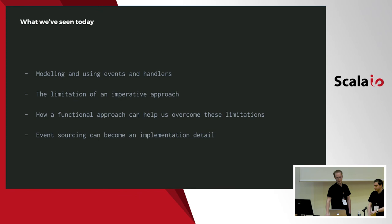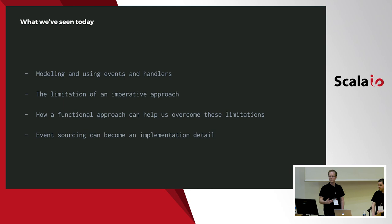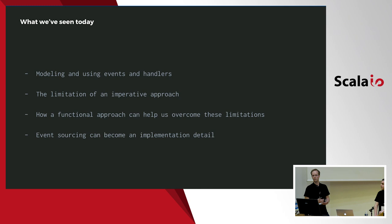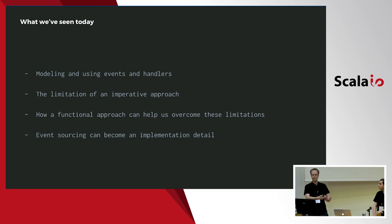Let's sum up. We've seen today what event sourcing is and what are the basic building blocks. We've seen how composability is important and that a functional approach can allow us to achieve such good composability. Also, it can really be done in such a way that event sourcing becomes an implementation detail of the program — you can write code that everybody understands and event sourcing is really transparent. Following the remarks from this morning, functional programming is not really an end by itself — it's just a means of achieving simplicity, and in this case we've seen how it can be applied to event sourcing.